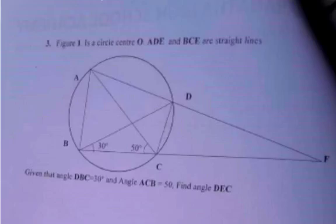Okay, let's see the solution of this question. It's about circle geometry, question number three. It reads: Figure 1 is a circle center O. ADE is a straight line, so this is ADE.